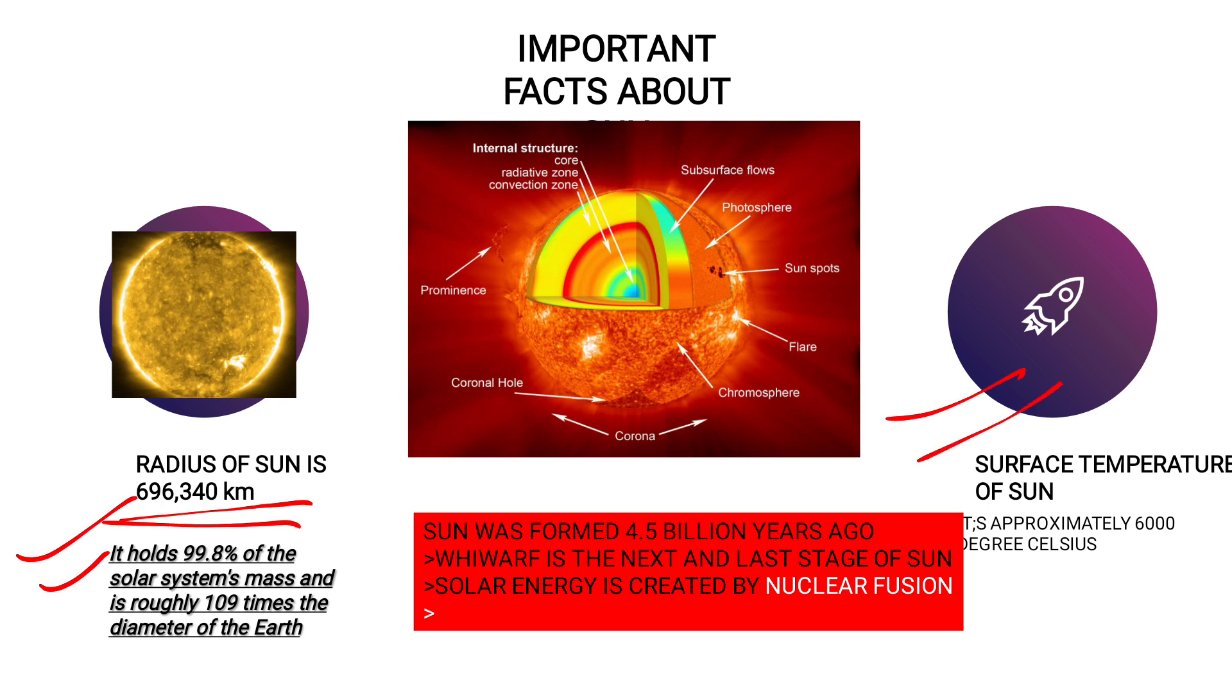Next, the important point here is surface temperature of the sun. It is approximately 6,000 degrees Celsius. Do remember the surface temperature of the sun is approximately 6,000 degrees Celsius. Sun was formed 4.5 billion years ago.